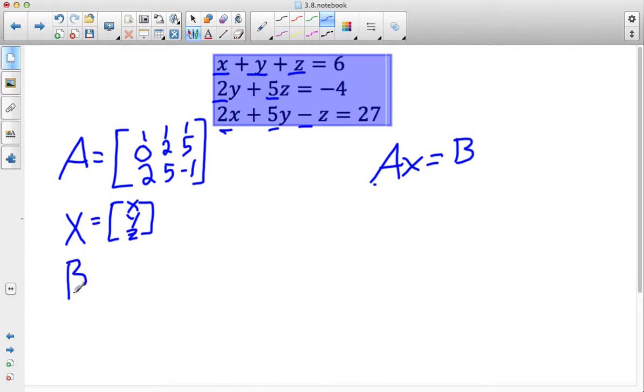And B is going to be my solution set, so 6, negative 4, and 27. Okay, well A, I'm going to multiply by X. Now remember, I want to get this matrix alone, I want to isolate it. So what I'm going to do is multiply both sides of this equation by the inverse of A.